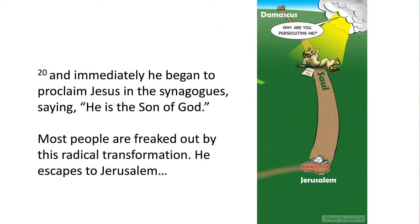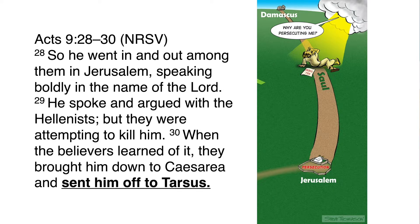In verse 20 it says, 'And immediately he began to proclaim Jesus in the synagogue, saying, He is the Son of God.' The next section of Acts talks about how most people are freaked out by this radical transformation of the one who was coming to kill them. He has to escape Damascus and goes to Jerusalem. Verse 28 says, 'So he went in and out among them in Jerusalem, speaking boldly in the name of the Lord. He spoke and argued with the Hellenists, but they were attempting to kill him.' Now these are the same ones who killed Stephen. When the believers learned of it, they brought him down to Caesarea and sent him off to Tarsus. Thus ends chapter 9.